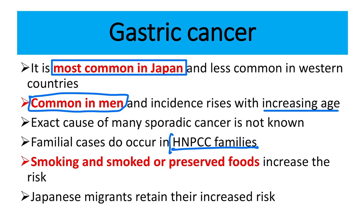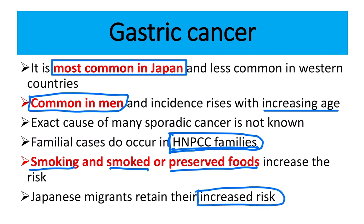In hereditary non-polyposis colorectal cancer (HNPCC) it may be associated with gastric cancer. Smoking, smoked food, and preserved food are risk factors that increase the risk of gastric cancer development. Japanese migrants retain their increased risk, so when a person is living in Japan they have more risk than in other parts of the world.